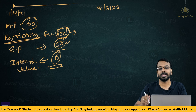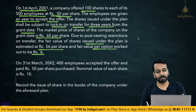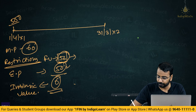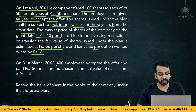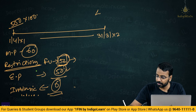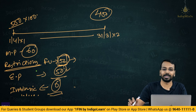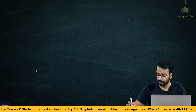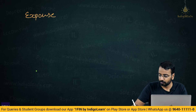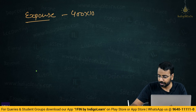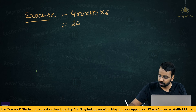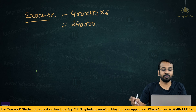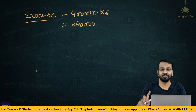On 31st March of year 2, 400 employees accepted the offer and paid ₹50 per share. The actual vesting is 400 employees, so the expense is based on 400. Expense = 400 × 100 × ₹6 = ₹2,40,000. The entire ₹2,40,000 is accounted for as an expense in the first year itself because there is only one year in this plan.